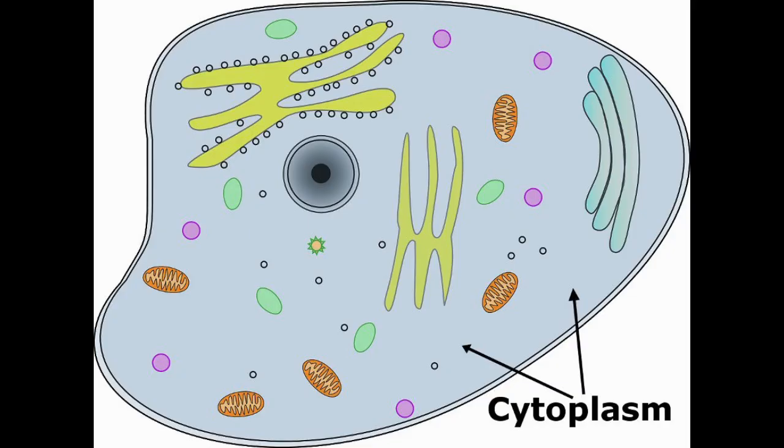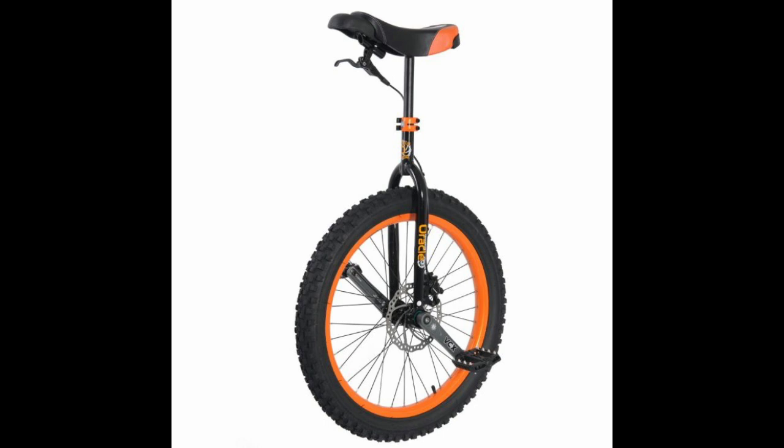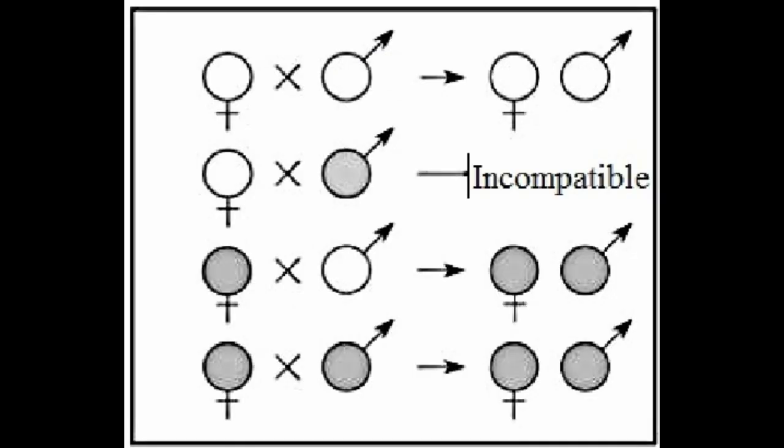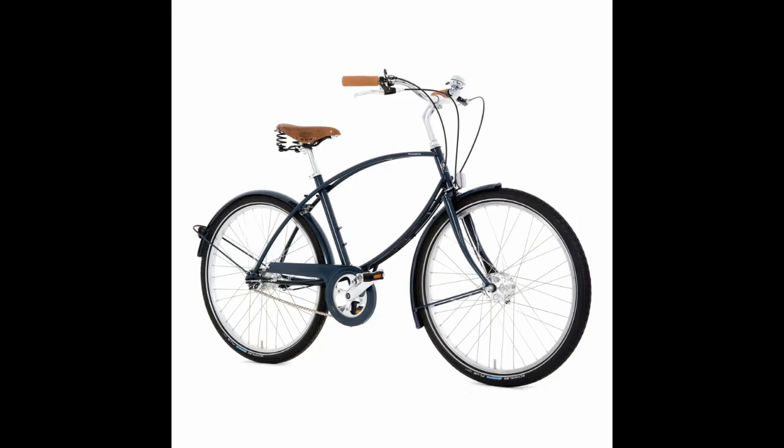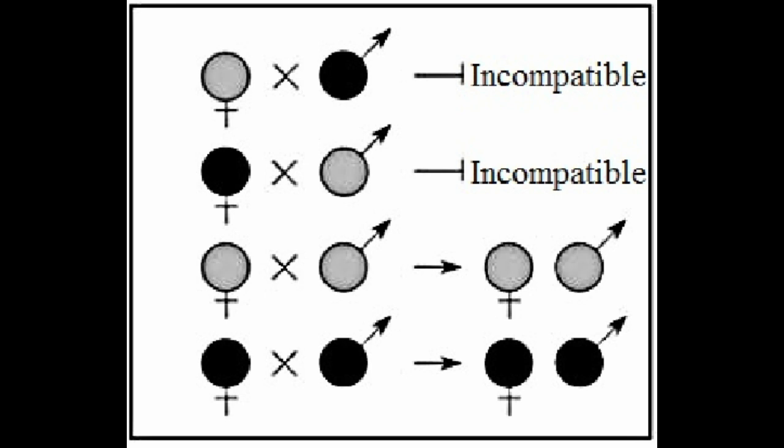There are two types of cytoplasmic incompatibility: unidirectional, where infected males mate with uninfected females, and bidirectional, where the male and female have different strains of Wolbachia.